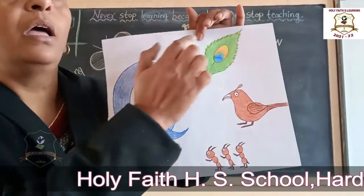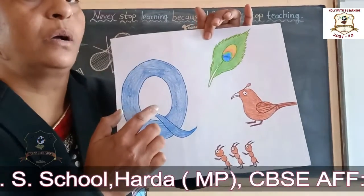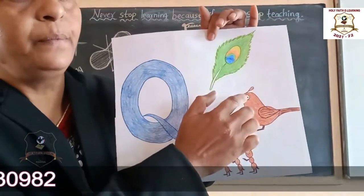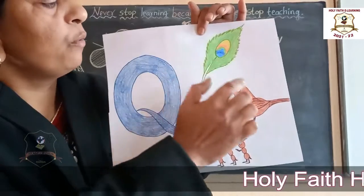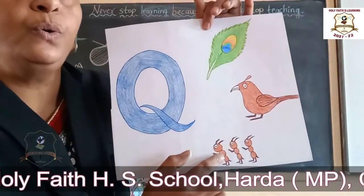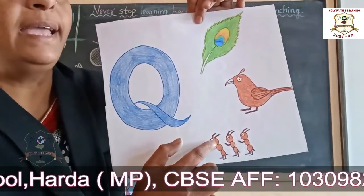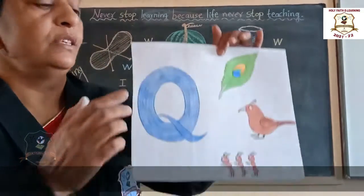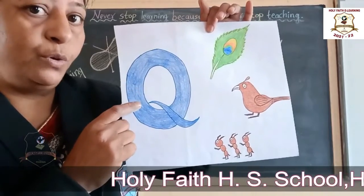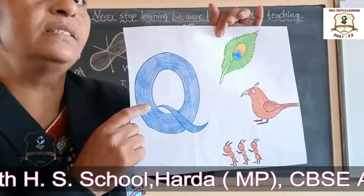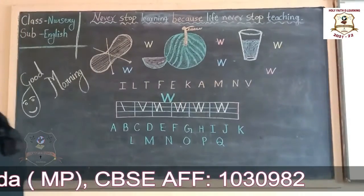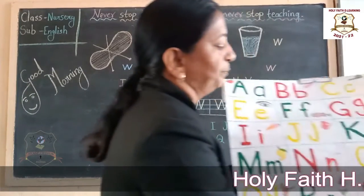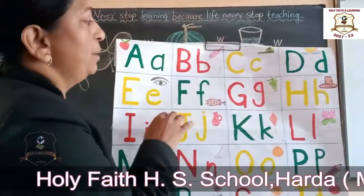And the sound of Q is 'qu'. Sound of Q is 'qu'. Okay. Say: qu, qu. The sound of Q is 'qu'. Okay students, now look here and say loudly. Okay, now I will say with Q. Okay, now I will say loudly.